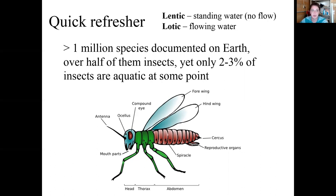Some general info about insects: there are over a million species documented on Earth in total across all groups, and over half of them are insects. But only about two to three percent of those insects are aquatic at some point in their life cycle. Insects are known for having six legs in their adult stage. There are three main segments to an insect body: the head, the thorax, and the abdomen. These are important to remember when working through identification.